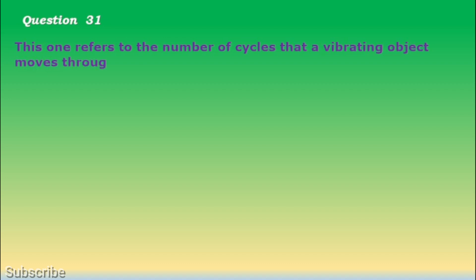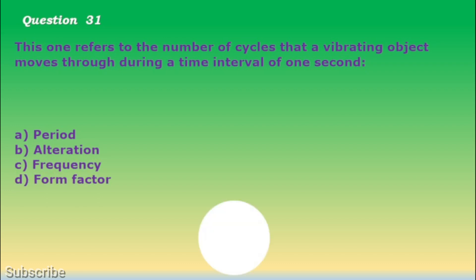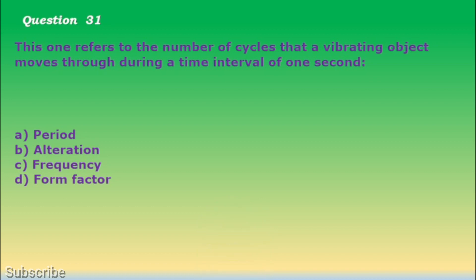Question number 31. This refers to the number of cycles that a vibrating object moves through during a time interval of one second. a. Period, b. Alteration, c. Frequency, d. Form factor. The correct answer is letter c. Frequency.